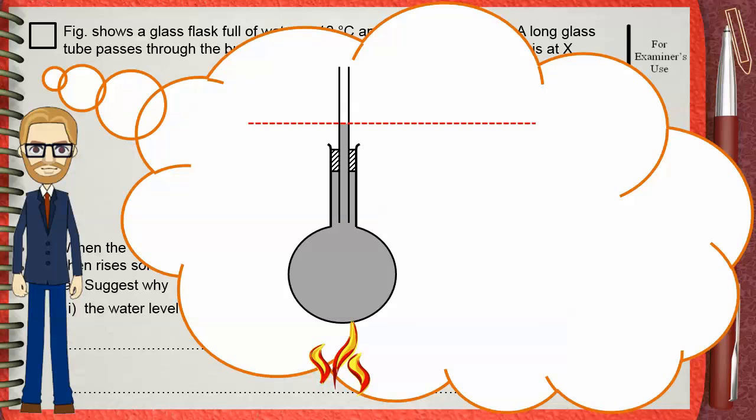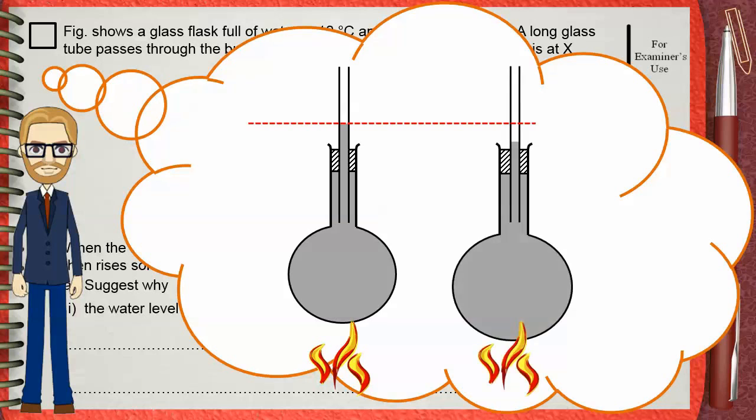The first thing to receive heat is the glass body of the flask. This is a solid, so it will expand. The size of the flask increases and the water level falls.